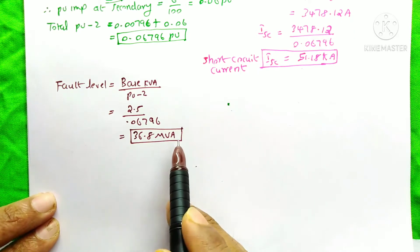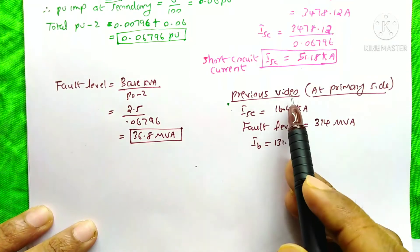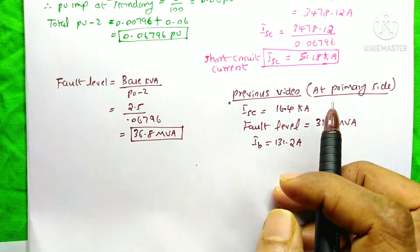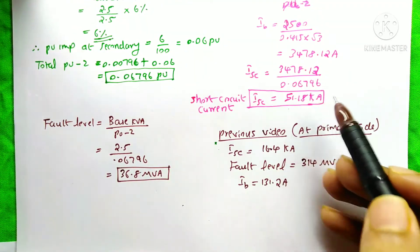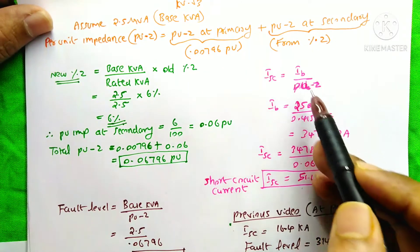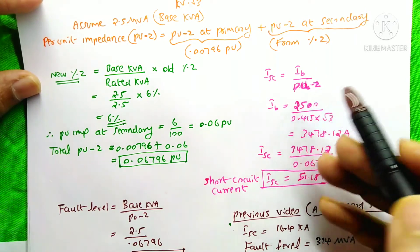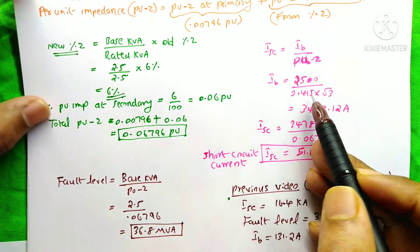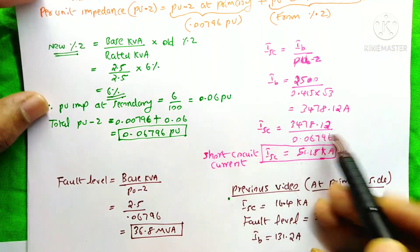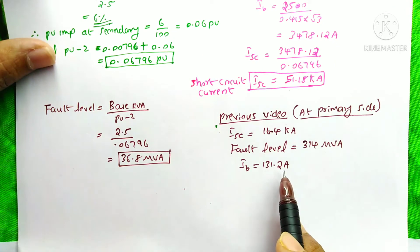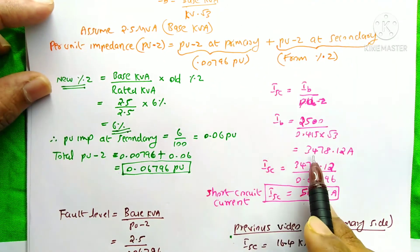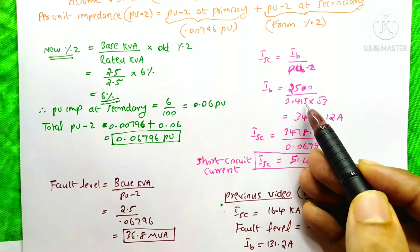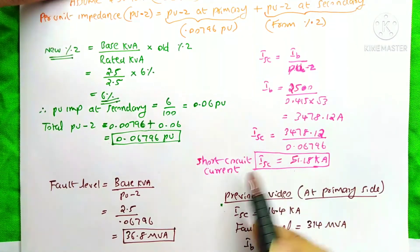Notice one thing here: in the previous video, when we calculated at the primary side, the short circuit current ISC was 6.4 kA. But here at the secondary, it is 51.18 kA — it has increased. Why? The equation is IB divided by per unit impedance. The per unit impedance increased, but at the same time, the voltage at the secondary side decreased. Due to the decrease in voltage, the base current IB increased — from 131.2 Amps at the primary to 3478 Amps at the secondary. Even though per unit impedance increased, the base current increased much more, so the short circuit current at the secondary increased.